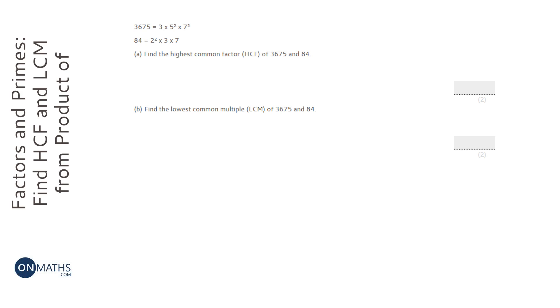When numbers are quite small, it's quite easy just to do trial and error to find the highest common factor and the lowest common multiple. But when the numbers are larger, then the way we do it is with product of prime factors.